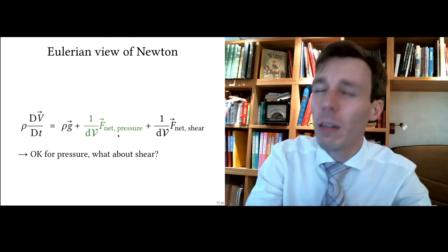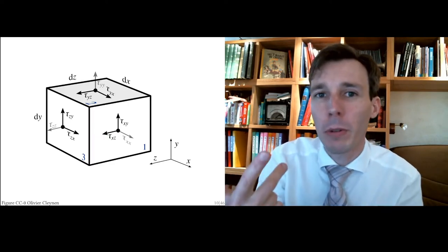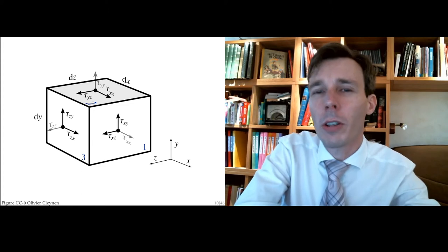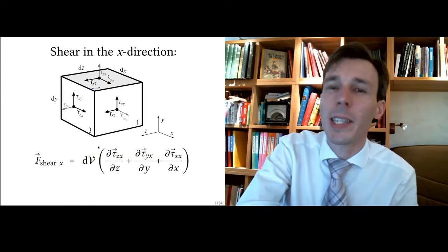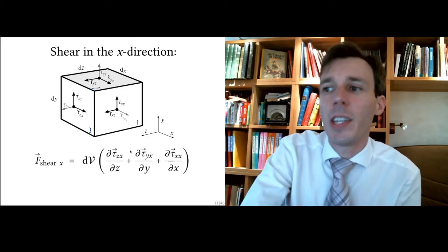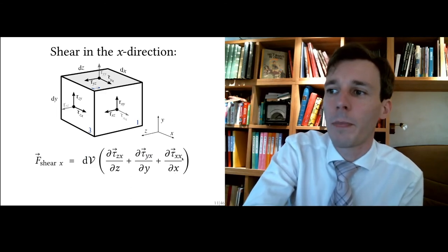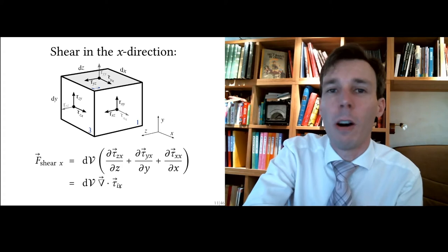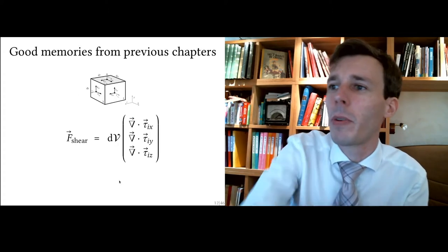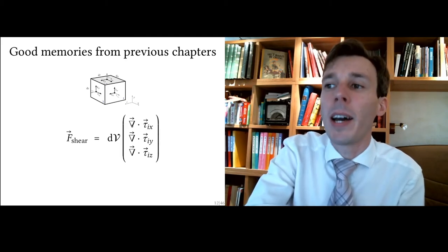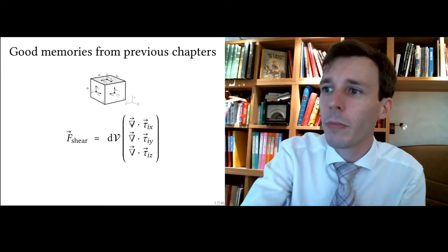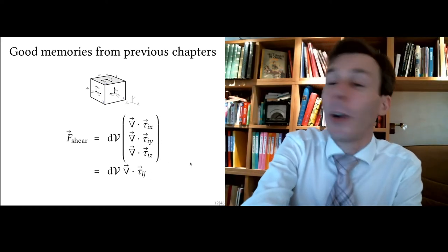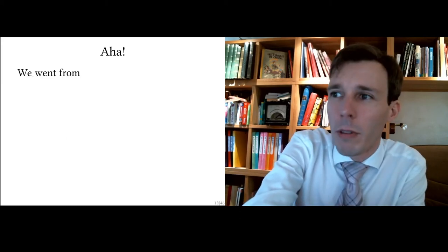Shear has three components at any point in space. Taking into account all three components on each of the six faces of the cube, for any direction — for example X — you take the change in all three directions of the three shear components pointing in X. We wrote this as the divergence of the shear tensor in the X direction, arriving at the divergence of tau_ij.